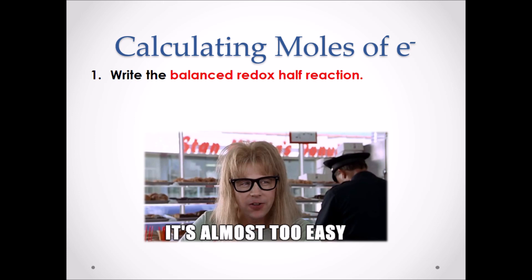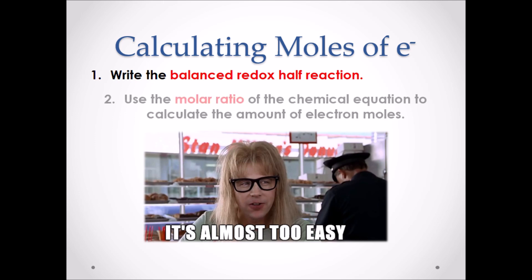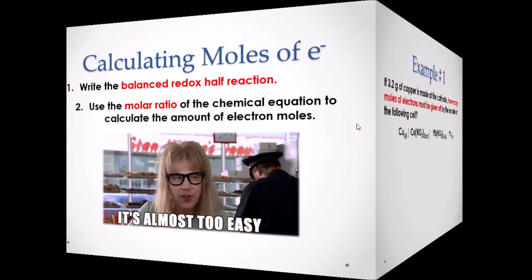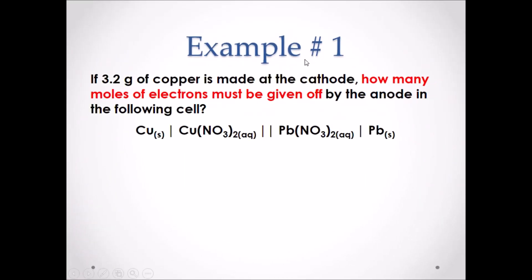Calculating moles of electrons: step one, write a balanced redox half reaction — remember only half reactions contain electrons. Step two, use the molar ratio of the chemical equation to calculate the amount of electron moles.